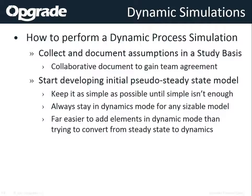Once that's done, you begin building your pseudo-steady state model. Always keep it as simple as possible until it absolutely cannot be that simple. The more complicated you make it, the harder it is for the pressure flow solver to solve — you're going to create a nightmare for yourself. Keep it as simple as you can for as long as you can. You want to keep it in dynamics mode as you're building it — add an element, add a stream, solve it dynamically and let it run flat. That populates the pressure-flow solver much better than trying to build an entire model and switch it over to dynamics from steady state.